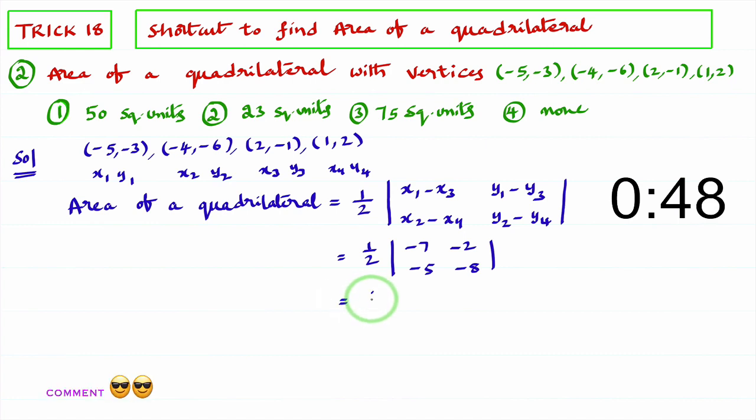Now you need to expand this determinant. You treat it as a, b, c, d. Then what to write? You need to write a d. Minus 7 into minus 8. 7, 8's are 56. Minus b c. Minus 5 into minus 2, that is 10. 56 minus 10 is 46. 46 divided by 2 is 23. 23 square units.